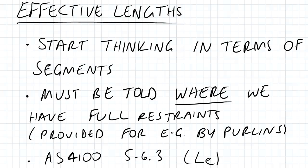The important thing to remember is that we must be told where we have full restraints — that could be provided, for example, by purlins, which have a spacing of, for instance, 1.2m. So if we're told that spacing or value, we can use that information to base our length and use the appropriate factors to find Effective Lengths. AS4100 clause 5.6.3 is the code section where we can find how to determine Effective Length.